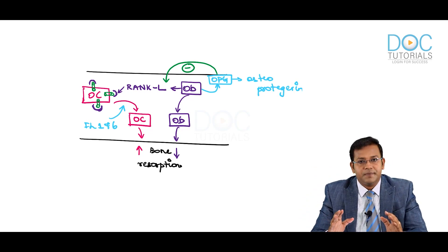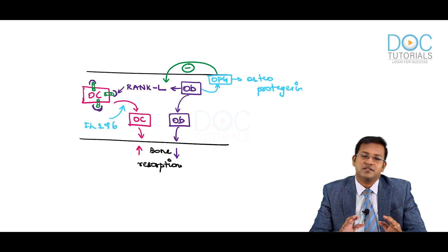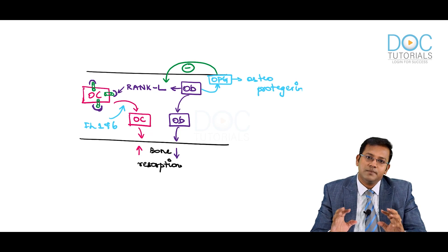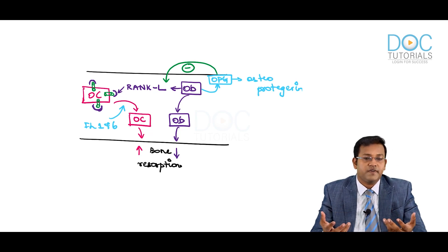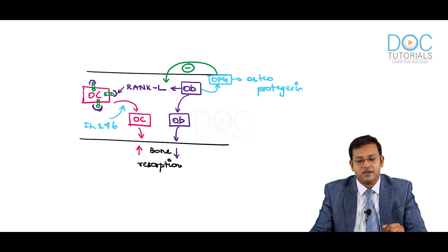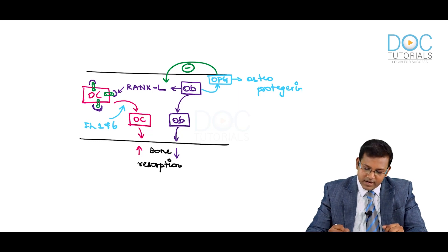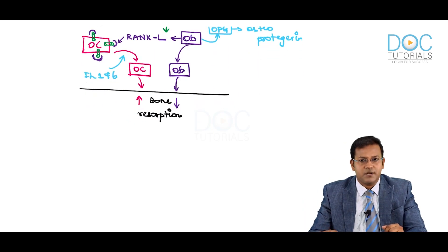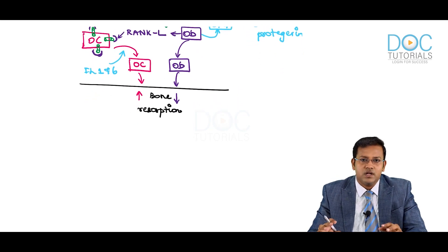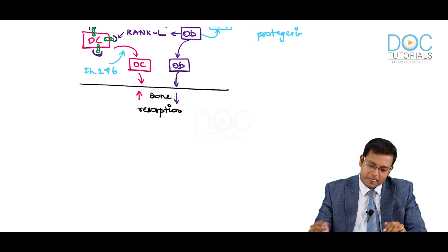To prevent bone resorption, you should prevent osteoclastic activation, and to prevent bone resorption you also need to increase osteoblast activity. We have three different drug groups that can be used: vitamin D3, calcitonin, and parathyroid hormone.